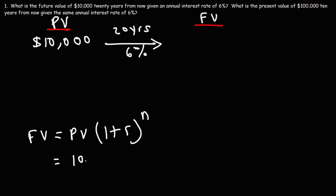So the present value is $10,000. The interest rate is 6%, or 0.06. N is the number of time periods, in this case, since the interest is credited on an annual basis, it's going to be the number of years, which is 20 years. So it's going to be 10,000 times 1.06 raised to the 20th power.